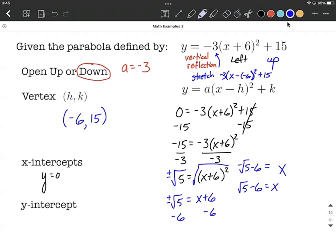And those are our two x values for x-intercepts. Now as ordered pairs, you could write these as negative square root of 5 minus 6 comma 0 for our y value and positive square root of 5 minus 6 comma 0 for our y value.